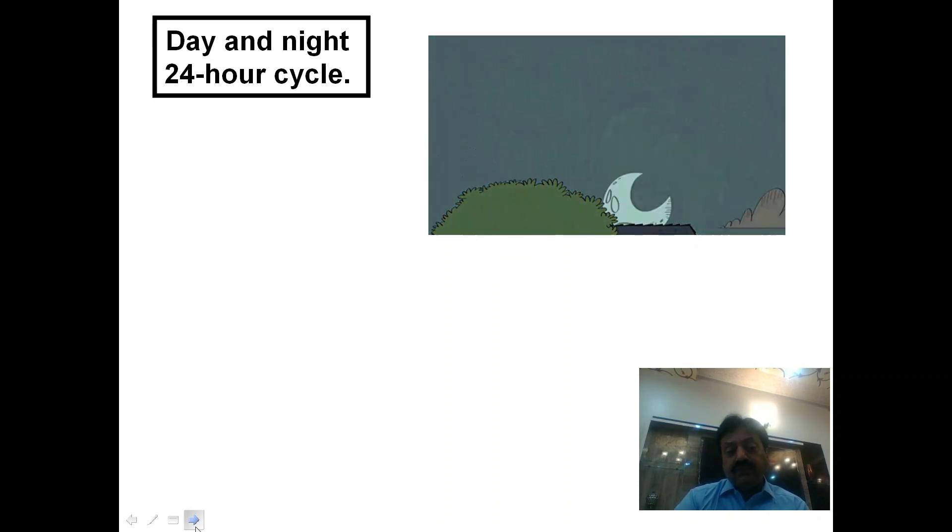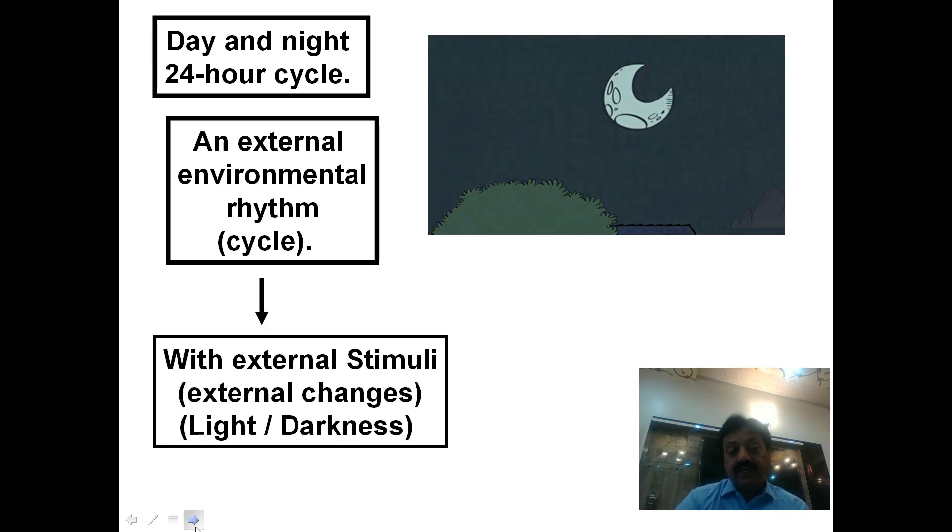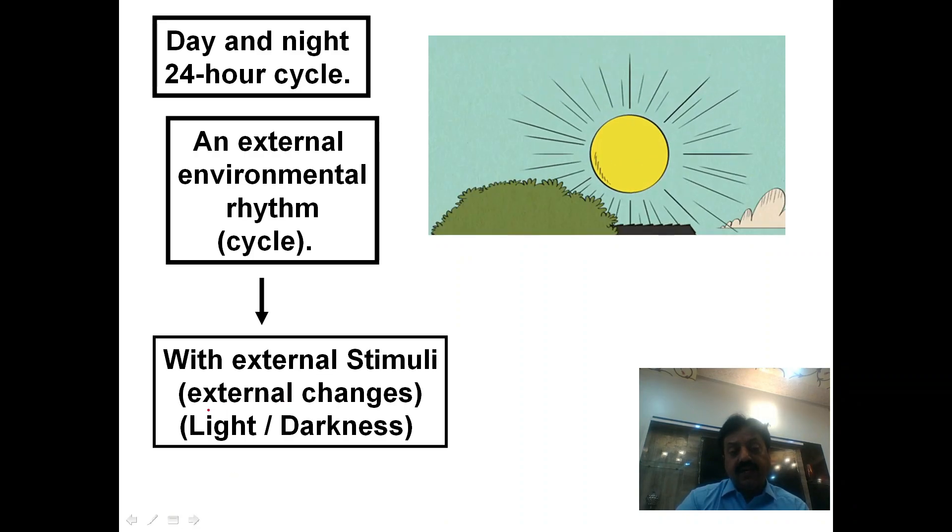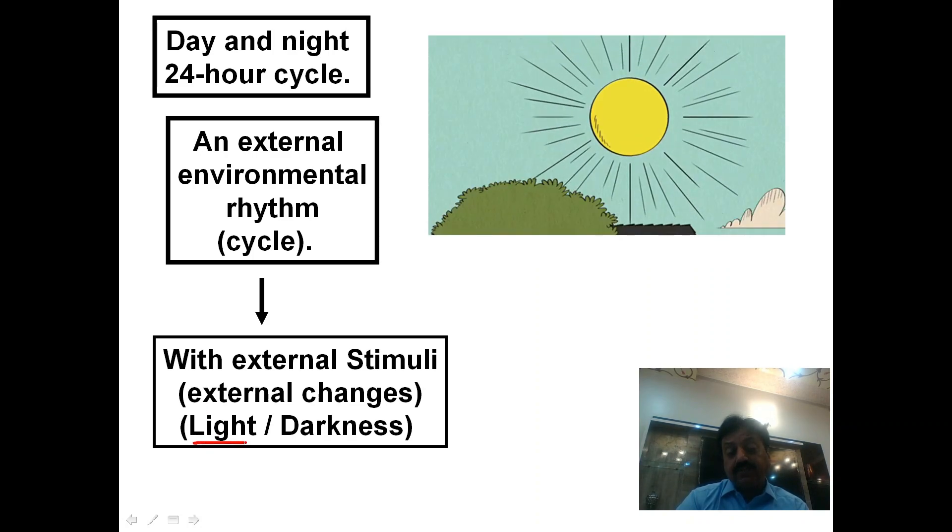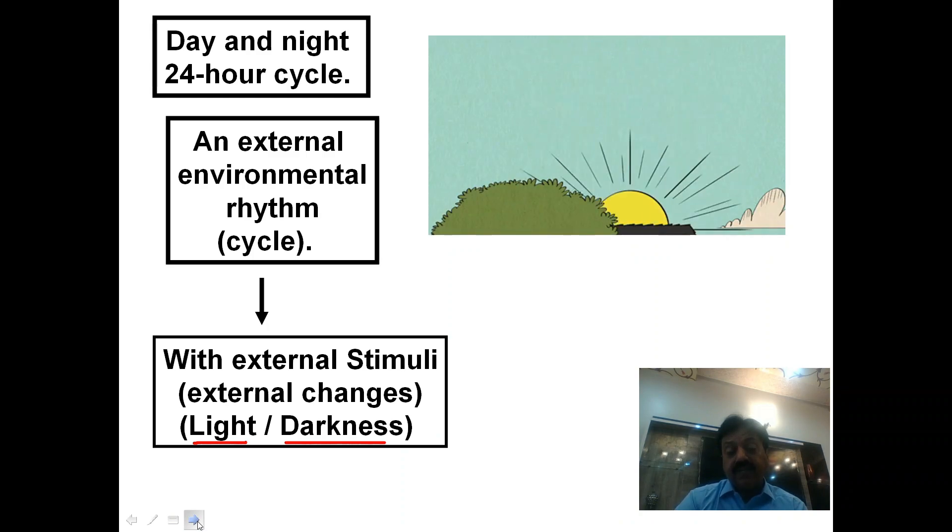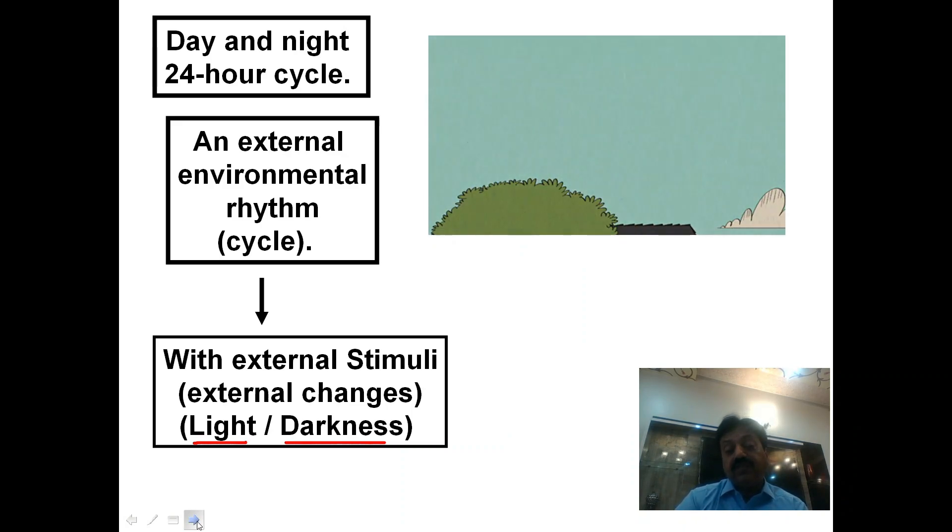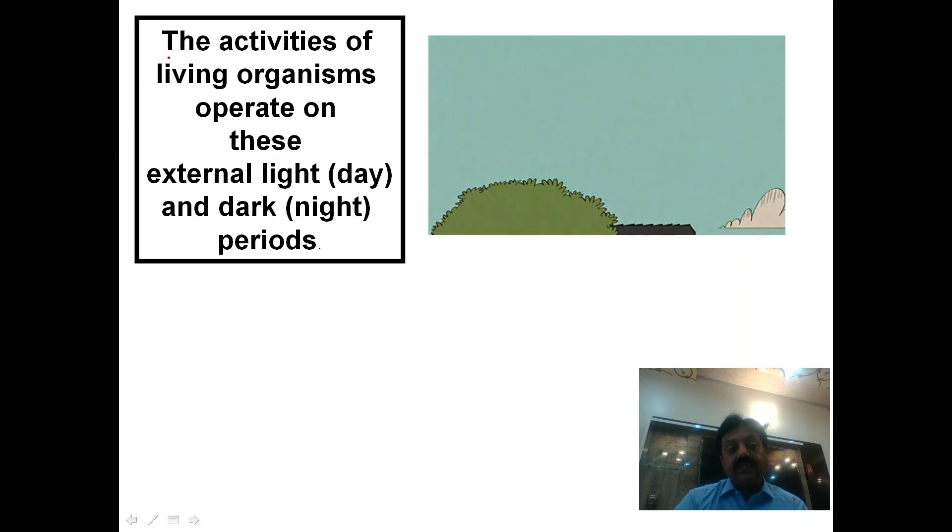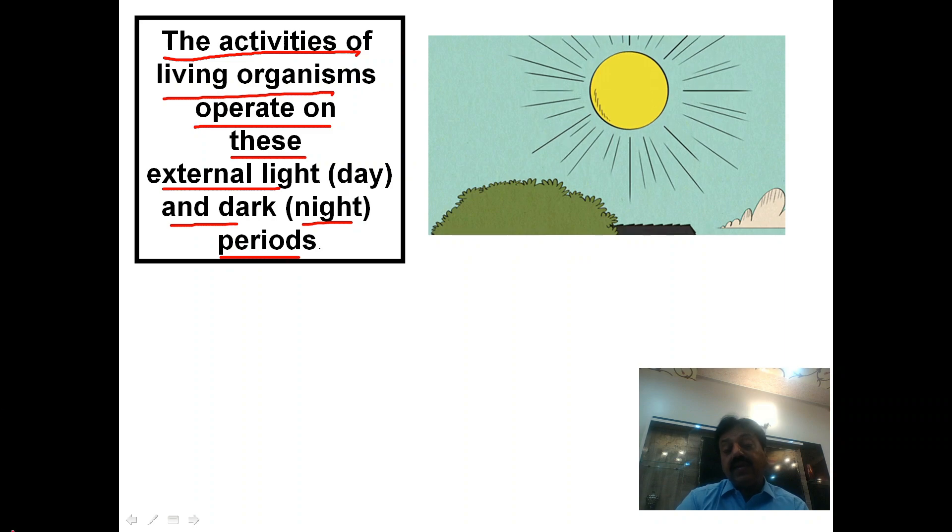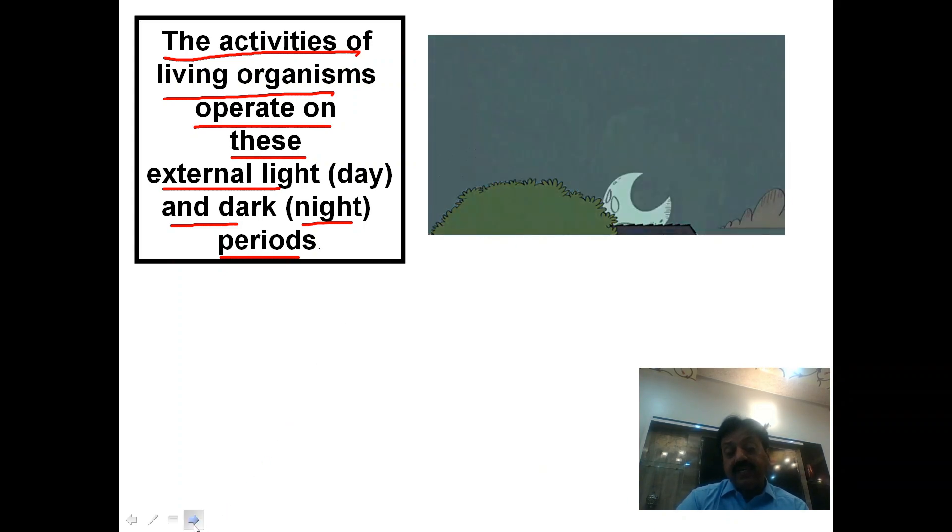The day and night 24-hour cycle is an external environmental rhythm with external stimuli. During the day there is light, and at night there is darkness. Environmental cycles affect our body and other organisms' bodies.